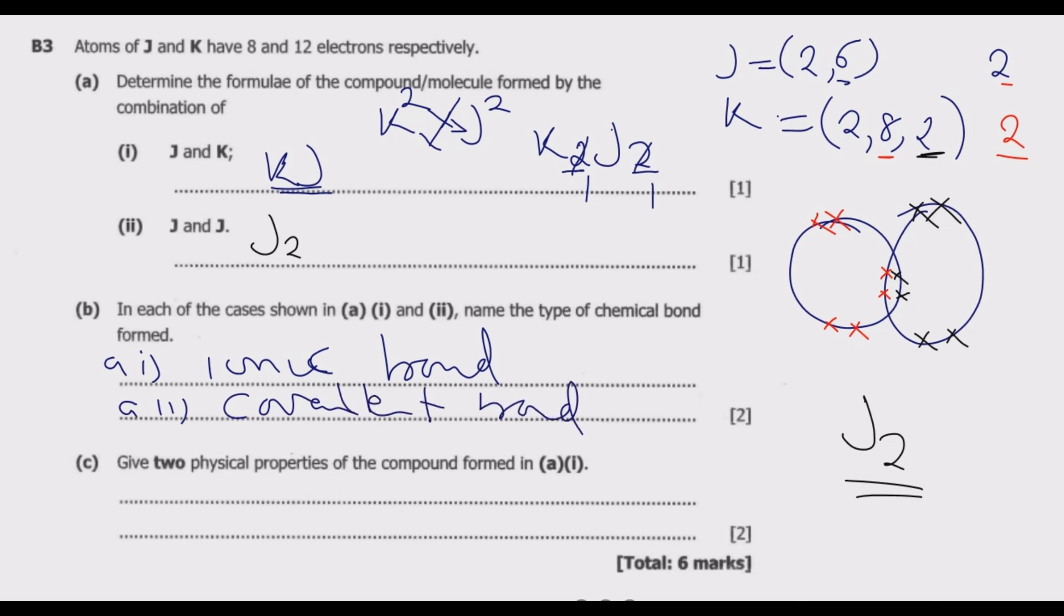Question C: Give two physical properties of the compound formed in L1, which is an ionic bond. Since we're asked for two, you can give any among the four I'm going to give you. Number one: ionic bonds are soluble in water. Number two: they conduct electricity in their solution or molten state.